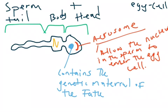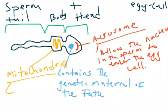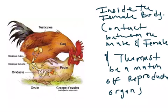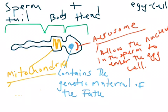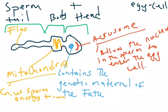Then we move on to the body. In the body there's a structure called the mitochondria, and its function is to give the sperm energy to swim. Lastly, the tail does what's called flagellation, which is basically an up and down movement that allows the sperm to move forward. The tail propels the sperm cell forward.